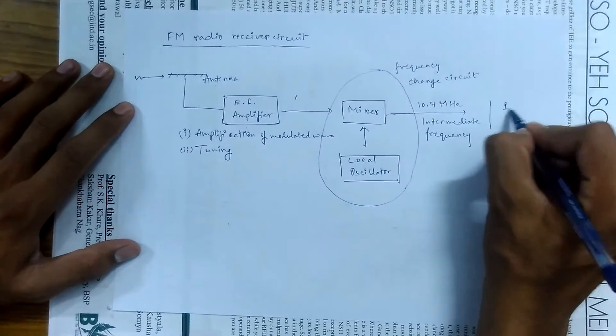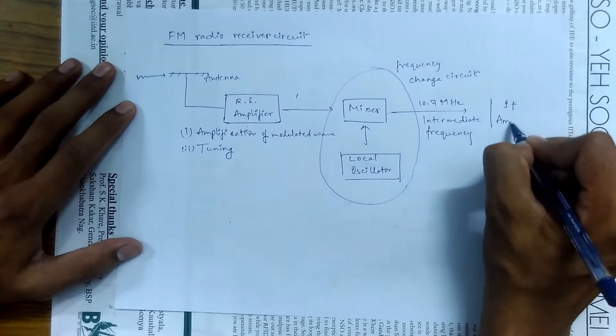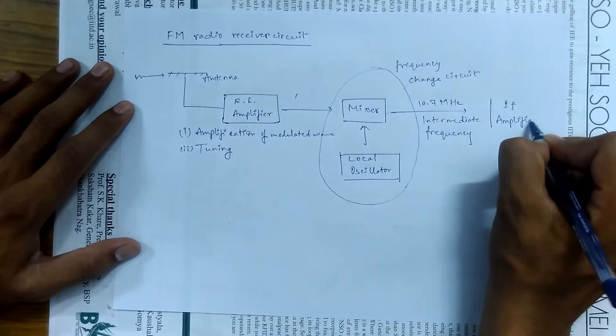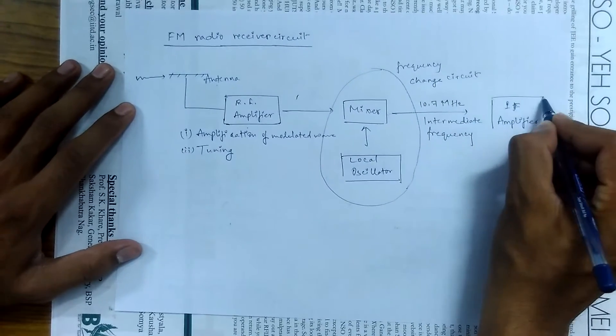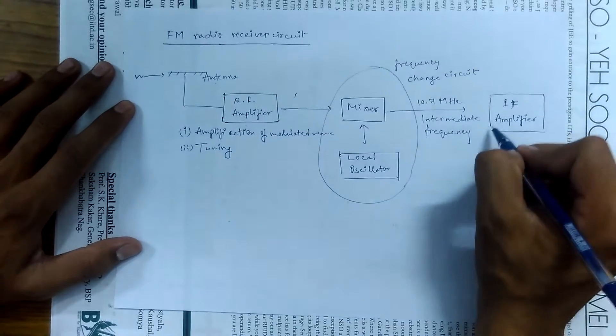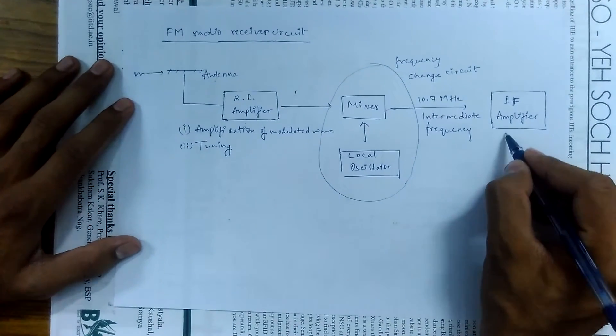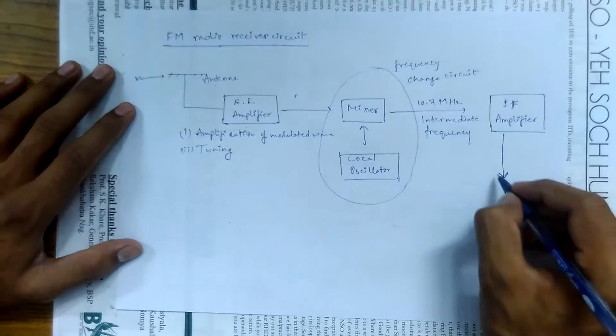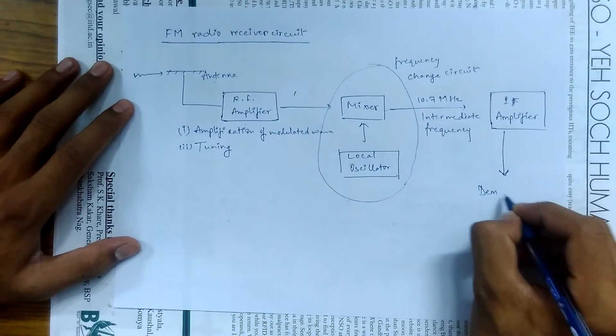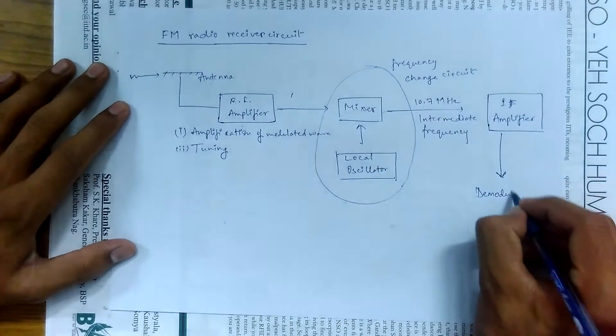Now our signal goes to the IF amplifier. At the IF amplifier, our signal is further purified and it's also amplified. Then the signal is forwarded to the demodulator.